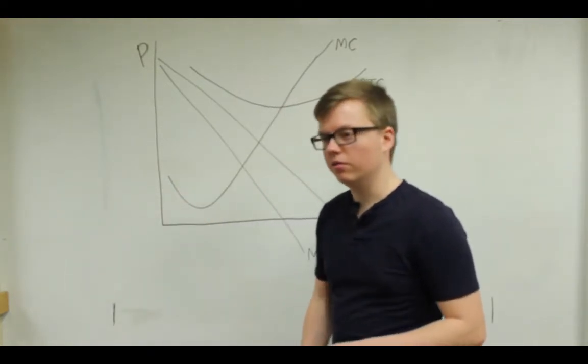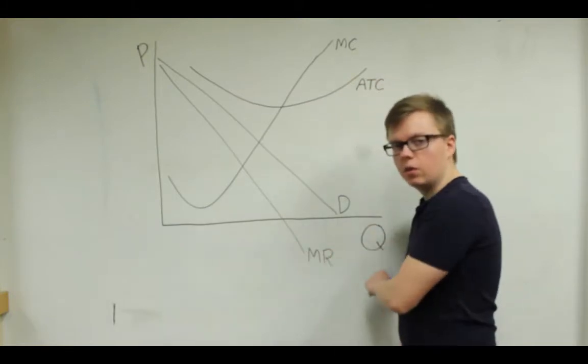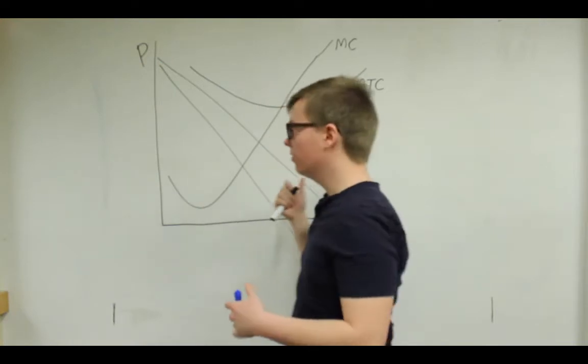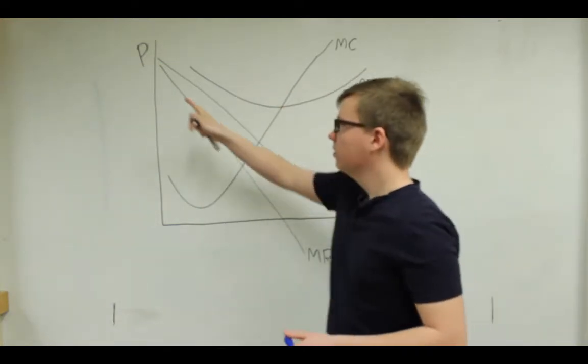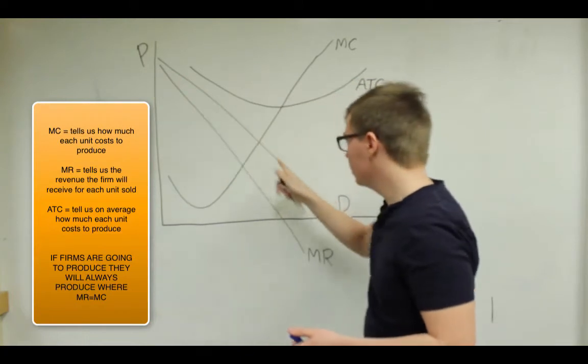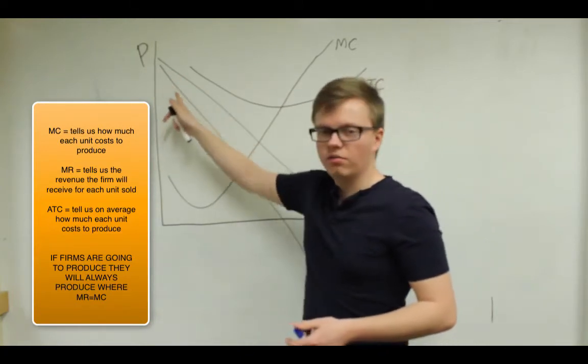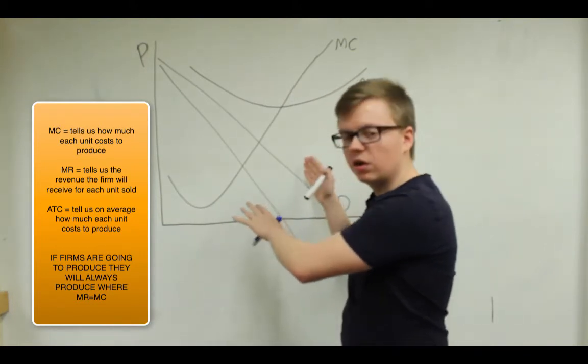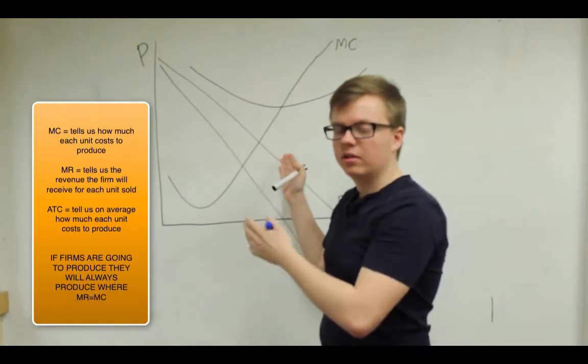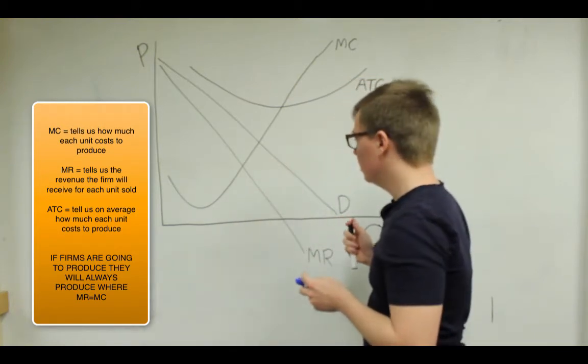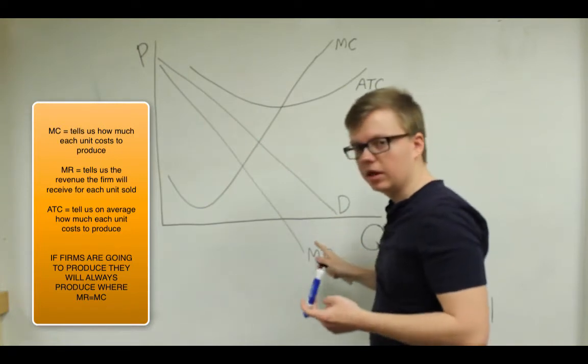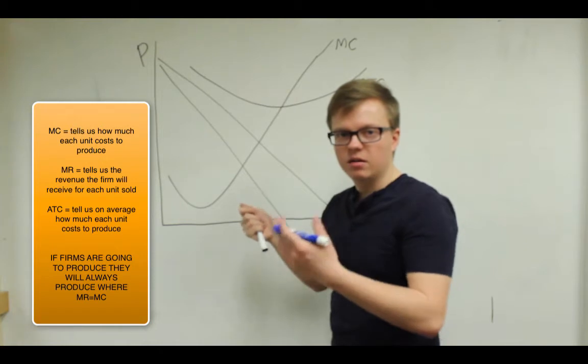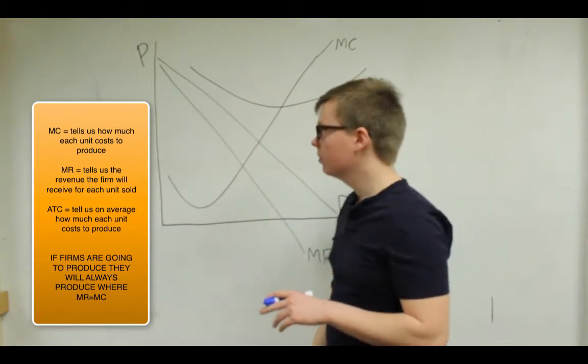So here's our graph. We have, as usual, quantity on the x-axis, price on the y-axis, and we have a few different curves. The first one to note is the demand curve, and below it we have the marginal revenue curve. If you look at these two things, you know that this firm is not in a perfectly competitive industry because it's facing a downward sloping demand curve, and the marginal revenue curve is below the demand curve. That's a consequence of the downward sloping demand curve.